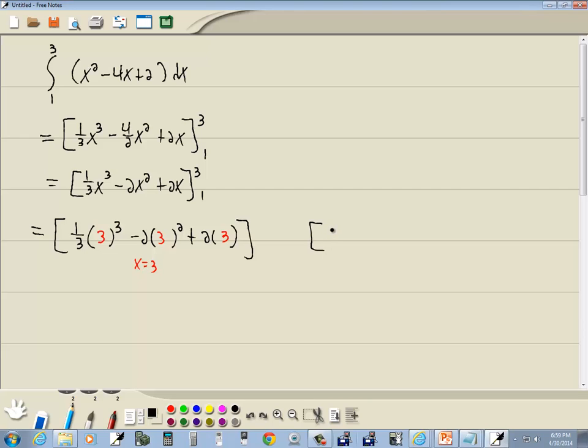Over here, we're going to have 1/3 times 1³ minus 2 times 1² plus 2 times 1. And then there's a minus in the middle, and this is x equals 1 we're plugging in.